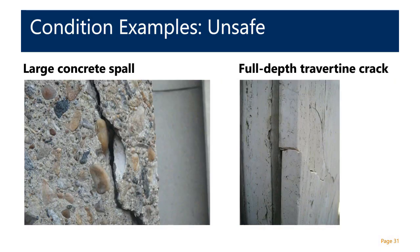Additional unsafe conditions include: on the left, a concrete spall — a piece of material that has cracked and become loose from the substrate, frequently due to corrosion of underlying reinforcement or structural steel — which could fall if left in place; on the right, a full-depth crack of a travertine unit with shards and visible movement. Both of these conditions are certainly unsafe and need immediate action to prevent any further deterioration or hazards.